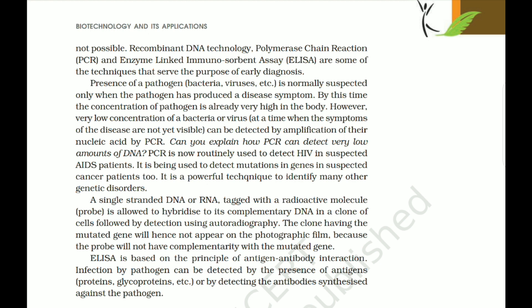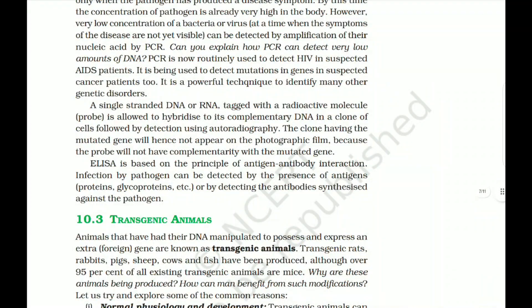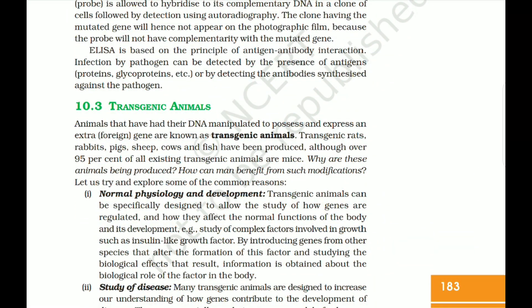A single-stranded DNA or RNA tagged with a radioactive molecule (probe) is allowed to hybridize to its complementary DNA in a clone of cells, followed by detection using autoradiography. A clone having a mutated gene will not appear on the photographic film because the probe will not have complementarity with the mutated gene. ELISA is based on the principle of antigen-antibody interaction. Infection by a pathogen can be detected by the presence of antigens (proteins, glycoproteins, etc.) or by detecting the antibody synthesized against the pathogen.